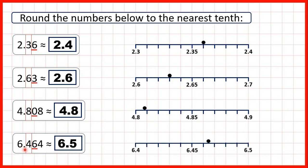So we can show 6.464 on a number line. We can see that it's closer to 6.5 than it is to 6.4. We can also see that 6.464 is between 6.46 and 6.47.